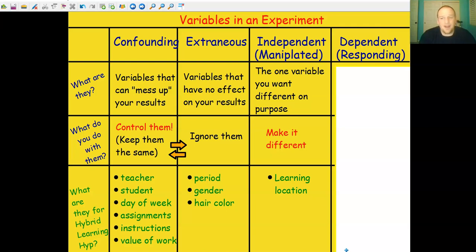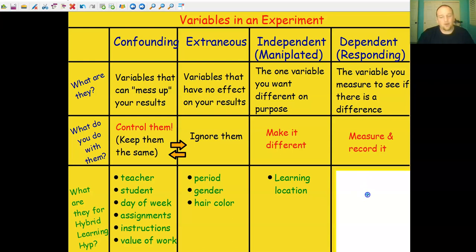And finally, we have the dependent or responding variable. The dependent variable is the variable in your experiment that you measure to see if there's actually a difference. In our case, we want to see if there's a difference between students' amount of work they get done at home versus the amount of work they get done at school. And so what do we do? We're going to measure and record this.